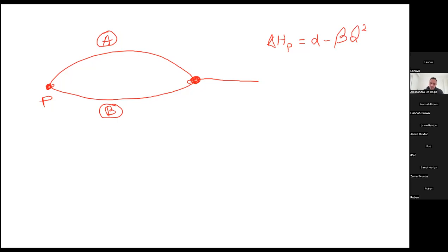We want to estimate the flow rate at the exit — I will call it point 1 — so we want to know Q, the total flow rate. We know that this system is in parallel, and we are told not to consider minor losses. So your pump has to fight against only the major losses in pipe A and pipe B.